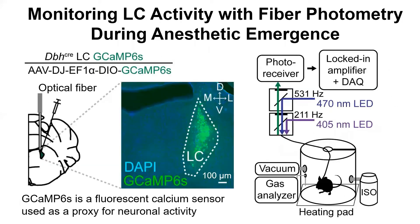To address this issue, I use a mouse model of anesthetic emergence, in which I can express a fluorescent calcium sensor, GCAMP6S, to be used as a proxy for neural activity, and I can implant an optical fiber to specifically monitor LC activity. The schematic on the right shows the experimental setup where I can deliver anesthesia and at the same time perform photometry recording.